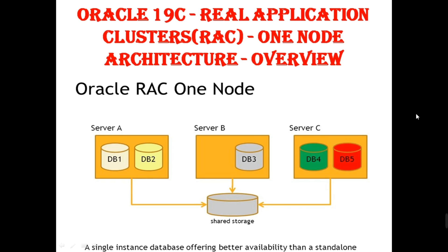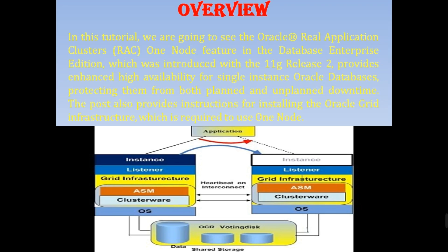The database remains running on single node only — a single instance database offering better availability than a standalone database. That is the main purpose of RAC One Node configuration. In this tutorial we are going to see the Oracle Real Application Cluster RAC One Node feature in Database Enterprise Edition, which was introduced with 11g Release 2. It provides enhanced high availability for single instance Oracle databases, protecting them from both planned and unplanned downtime. This tutorial also provides instructions for installing Oracle Grid Infrastructure, which is required to use One Node RAC.